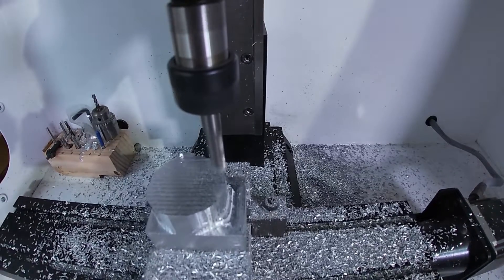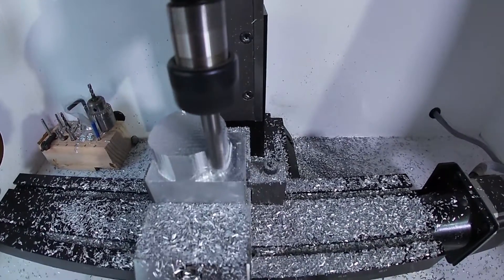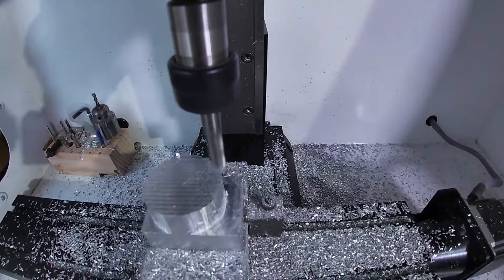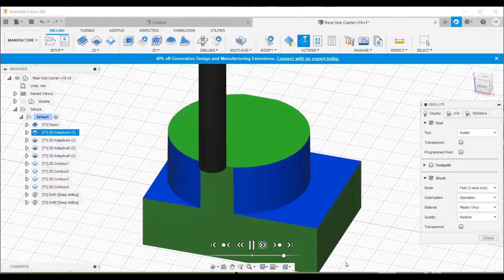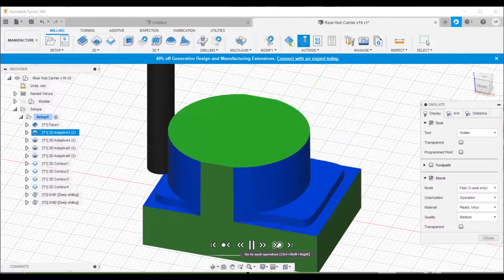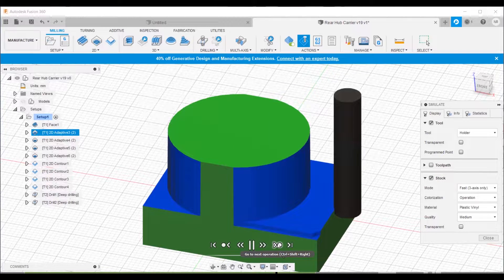This 2D adaptive was just creating that cylindrical feature on the top of the part. Once that was done, there were then the lugs to machine at the bottom where the brake calipers would be mounted.